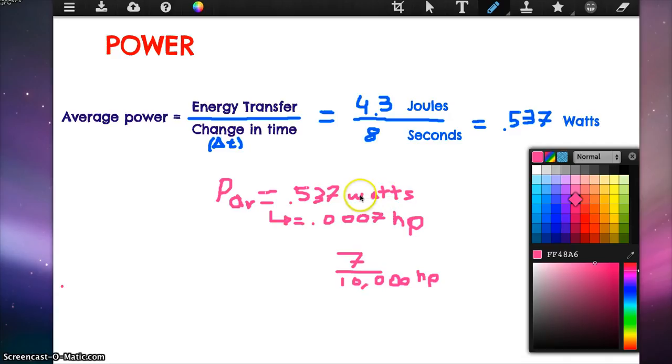And if we convert watts into horsepower, it's 0.007 horsepower, so that's about 7 divided by 10,000 horsepower.